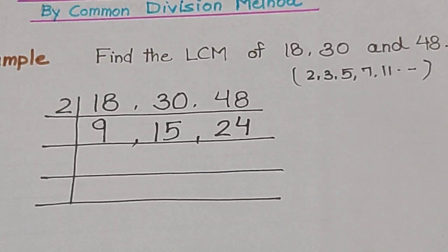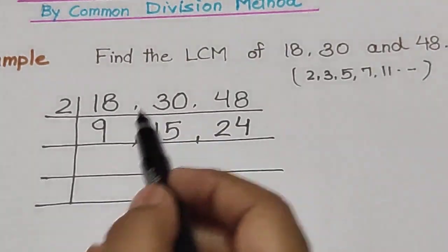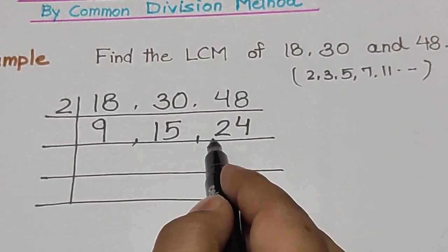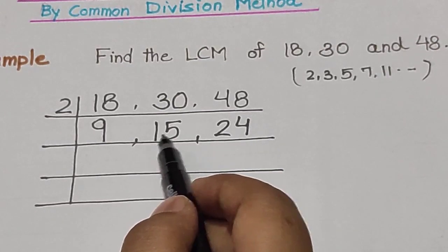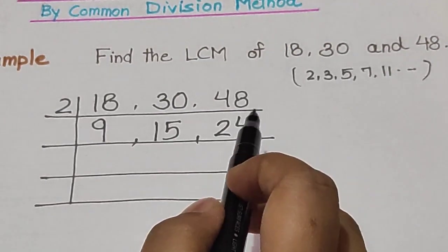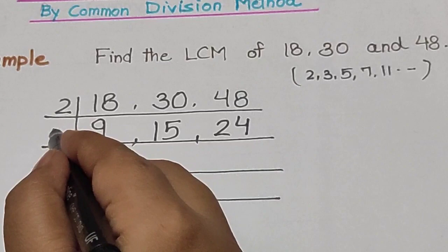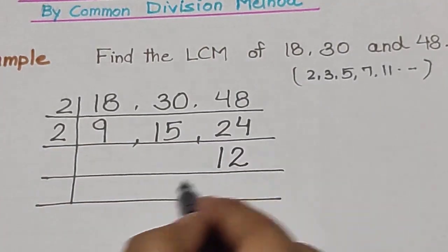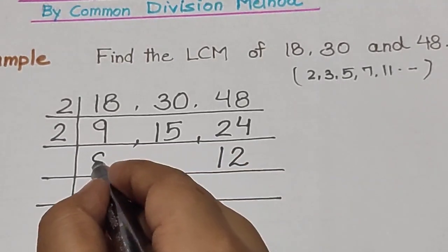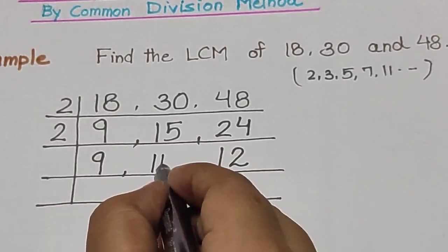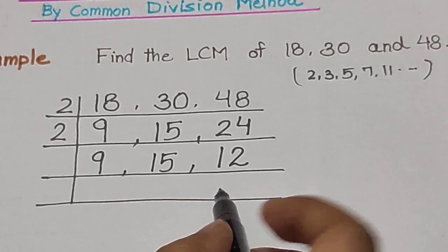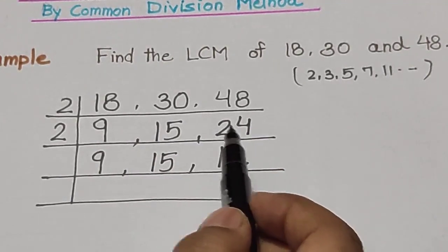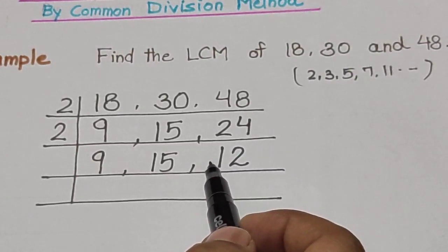When you divide it, you will get answers. Now 9 is divisible by 2? No. 15? No. But 24 is divisible. So let's divide 24 by 2. 2 times 12 is 24. 9 and 15 will be written as it is. And when we divide 24 by 2, it becomes 12.